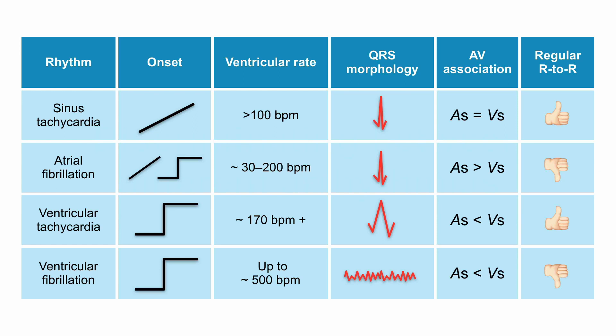QRS morphology is a discriminator that uses the appearance of a QRS to discriminate between benign rhythms and potentially dangerous ventricular arrhythmias.